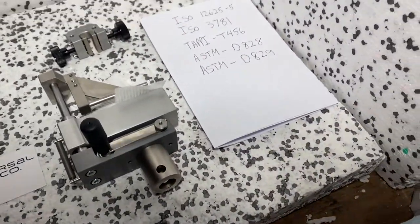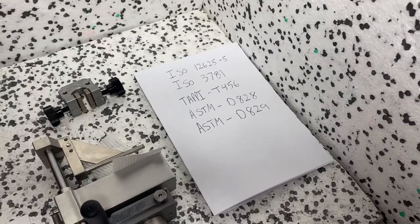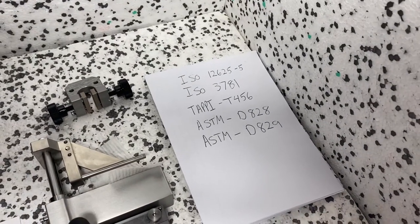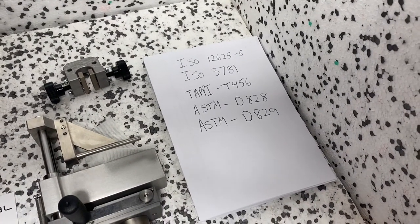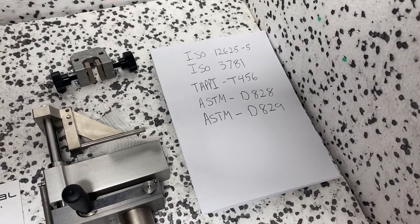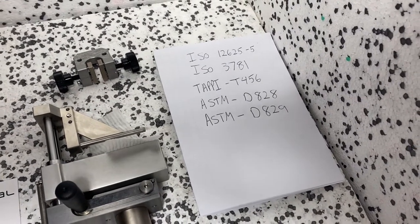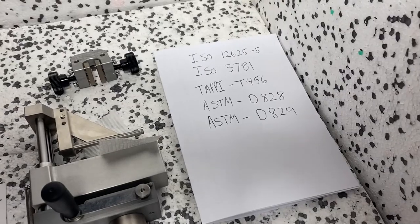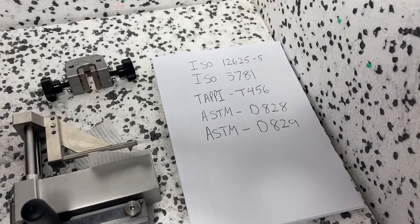This is the ASTM D828, can also use it for D829, the ISO 12625-5, ISO 3781, and the TAPI which is a paper and pulp standards testing protocol that's the T456.